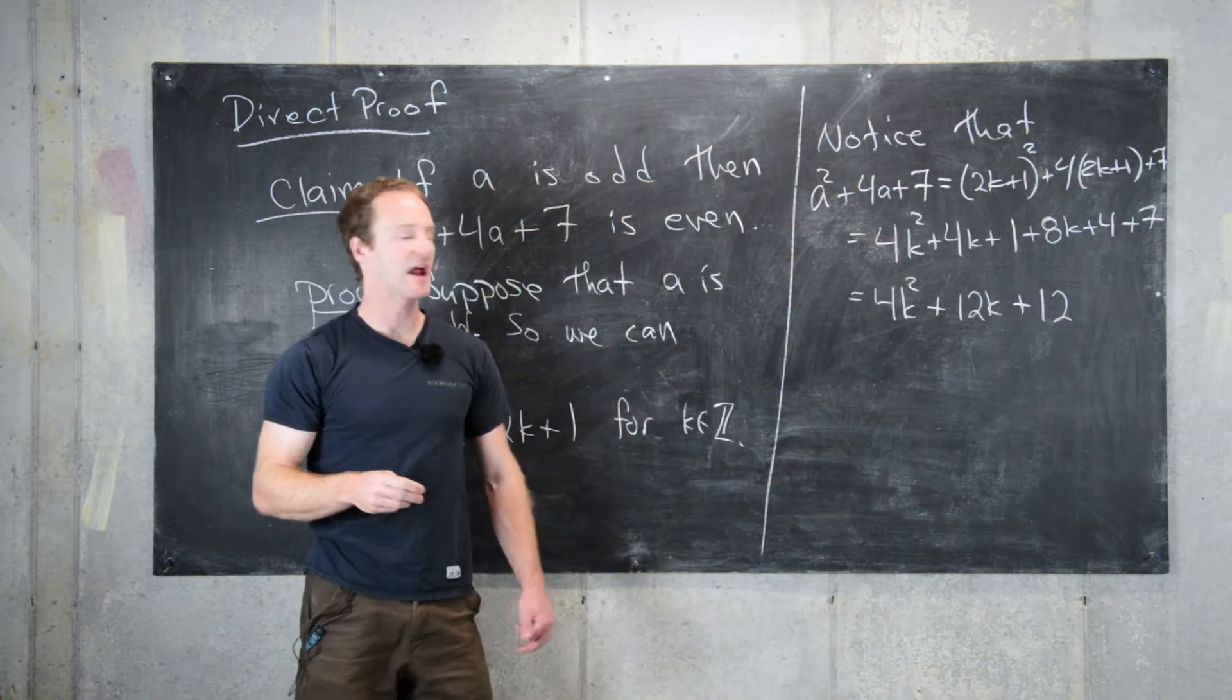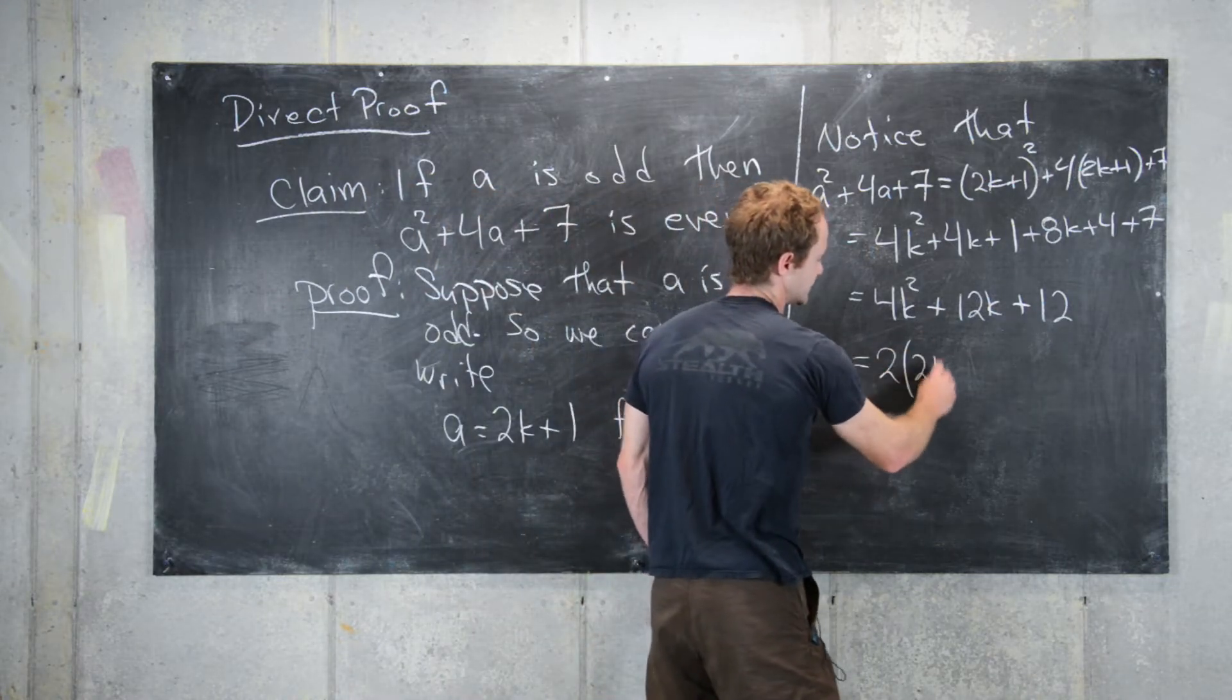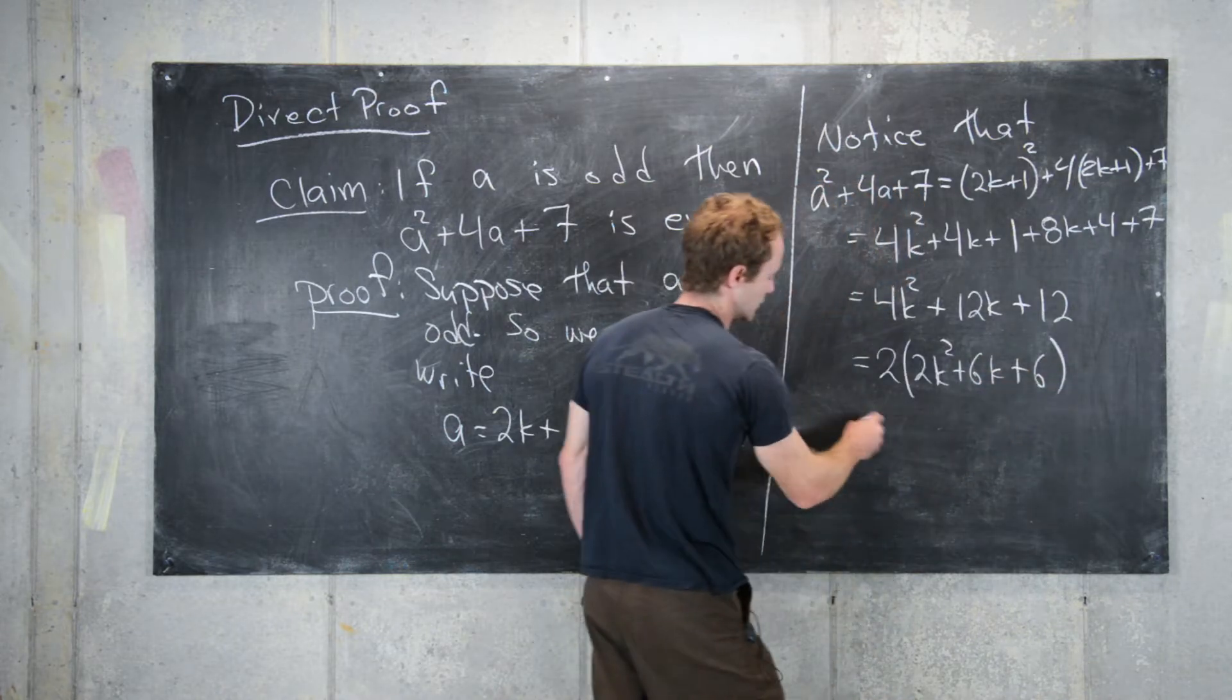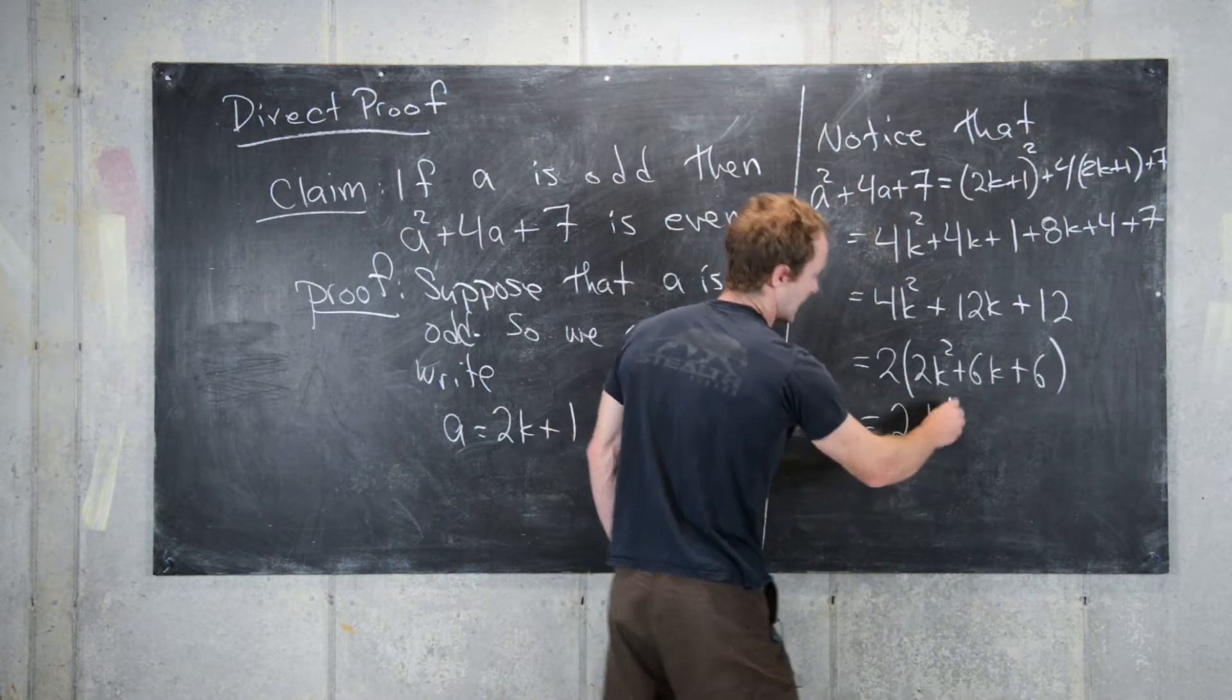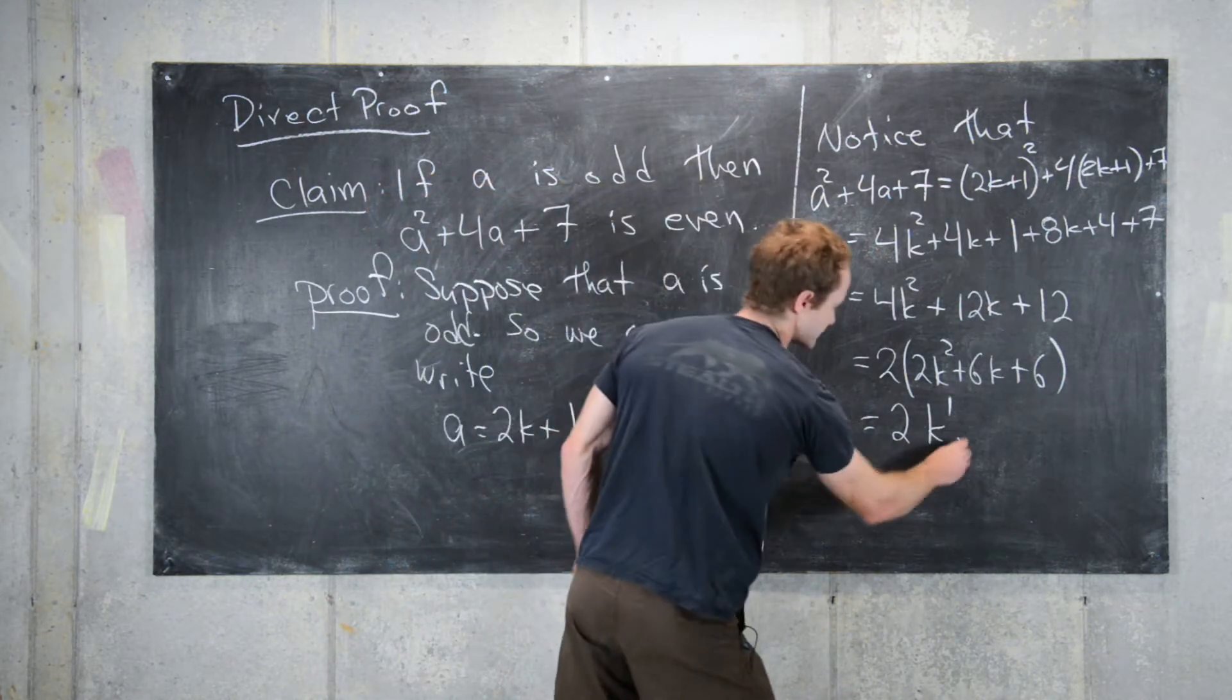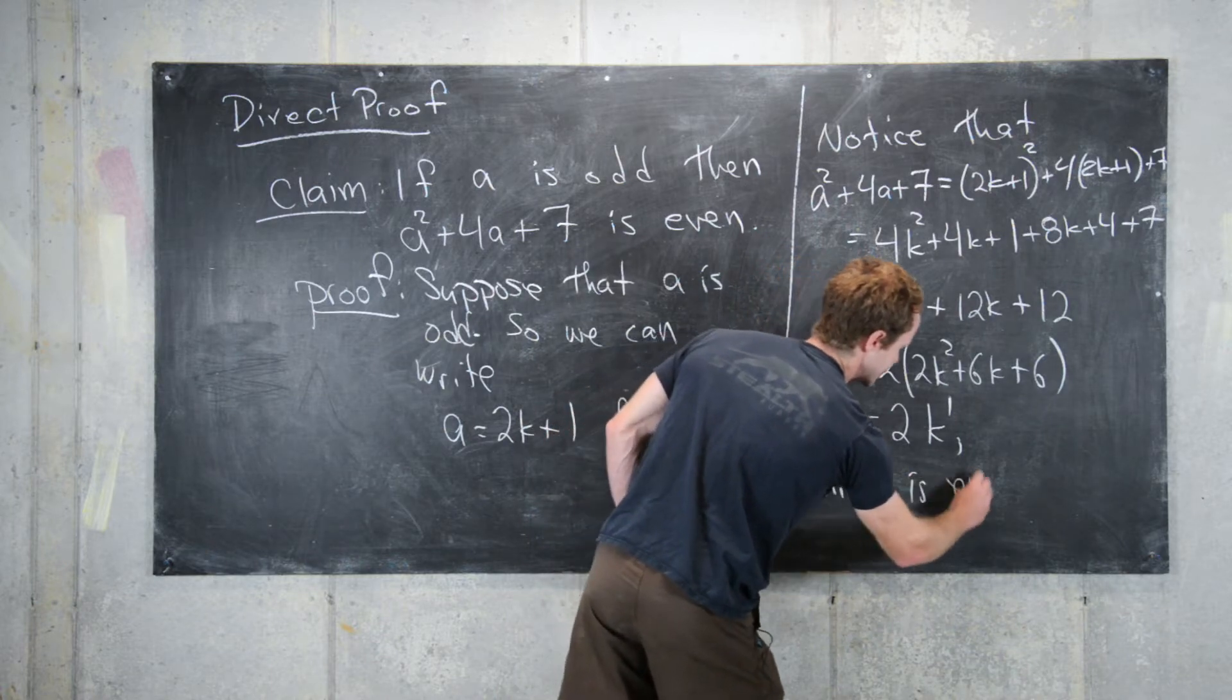Finally, we can factor a 2 out of everything. This equals 2(2k²+6k+6) = 2k', which is even.